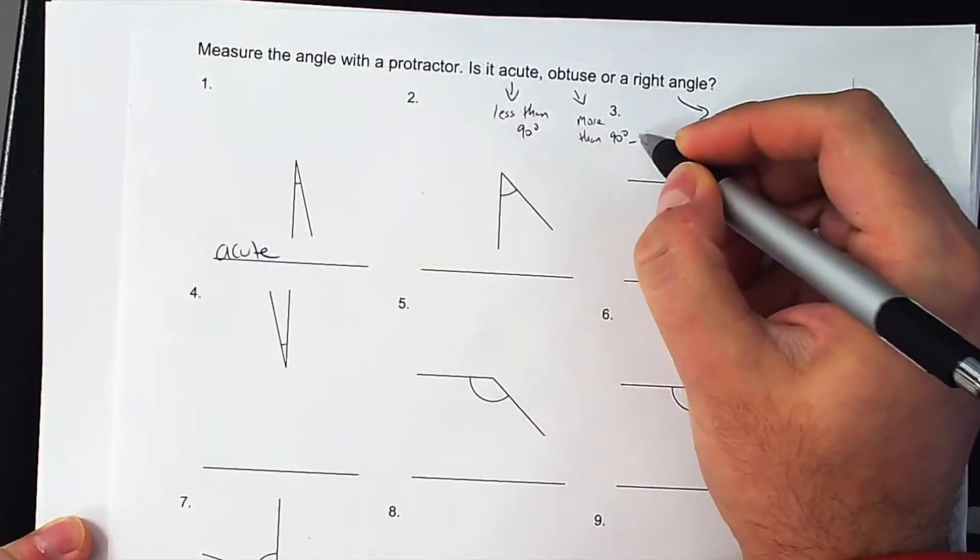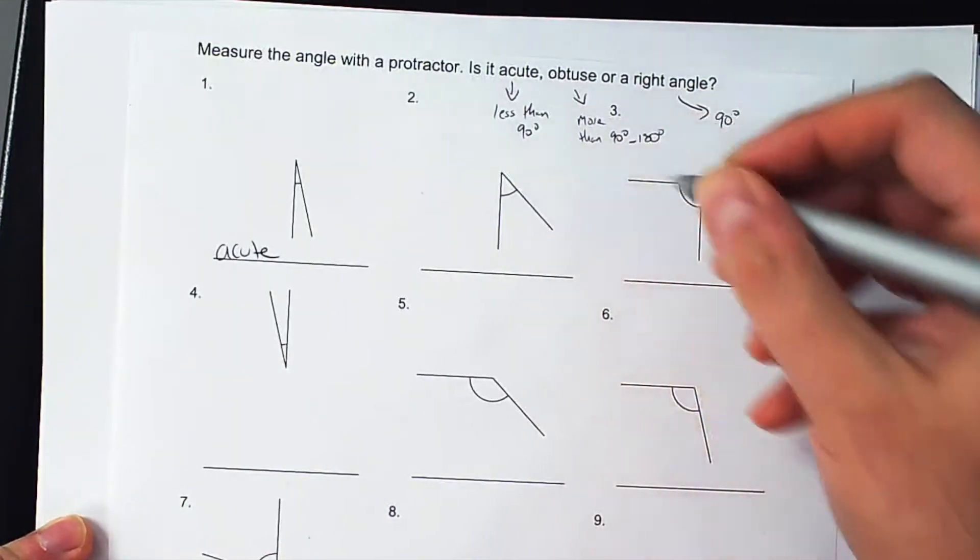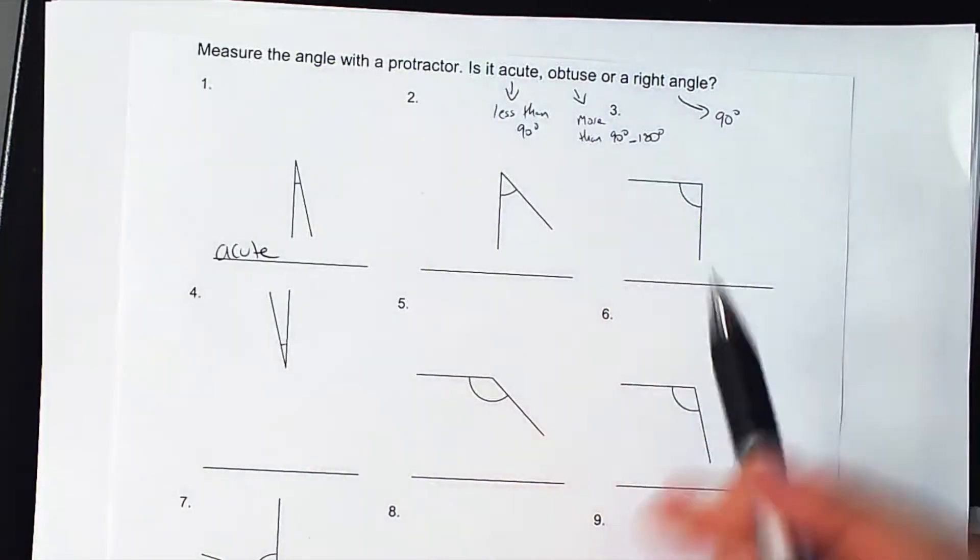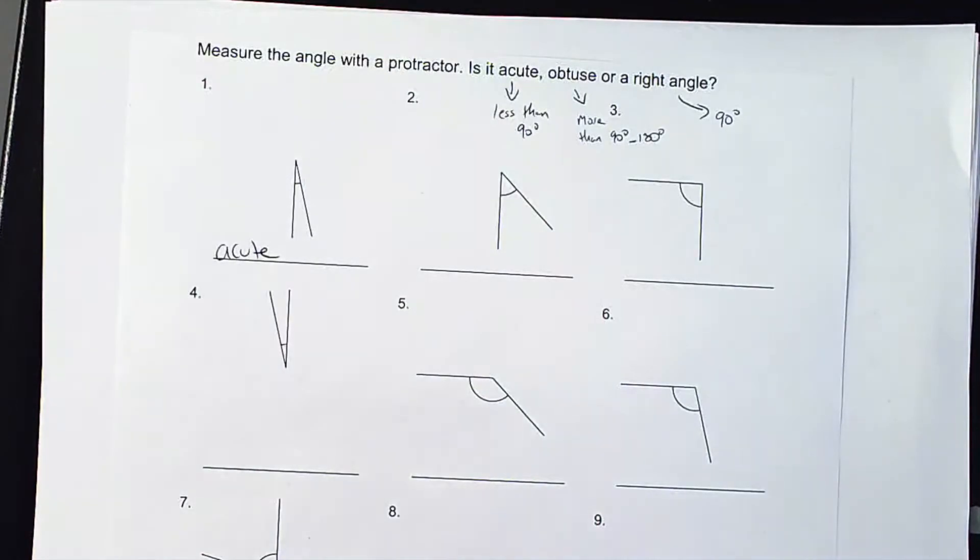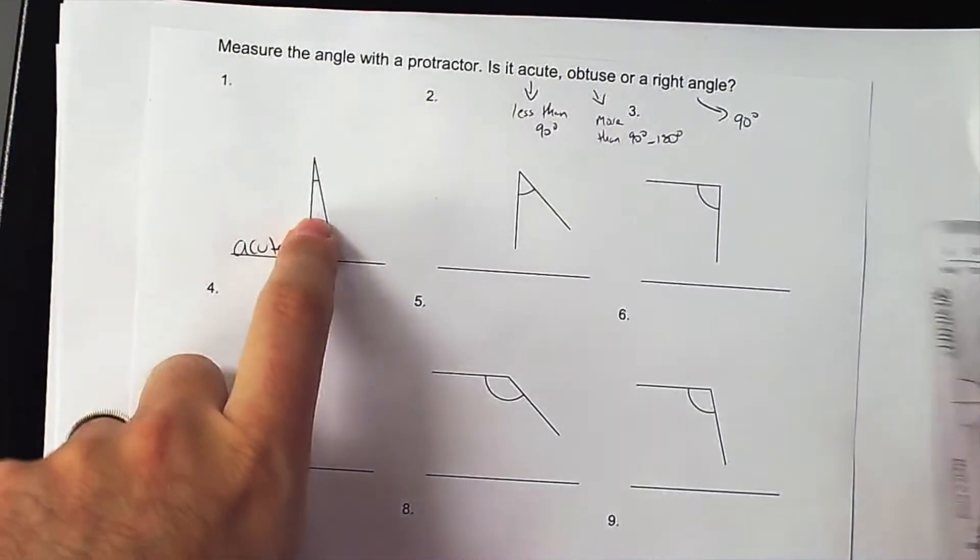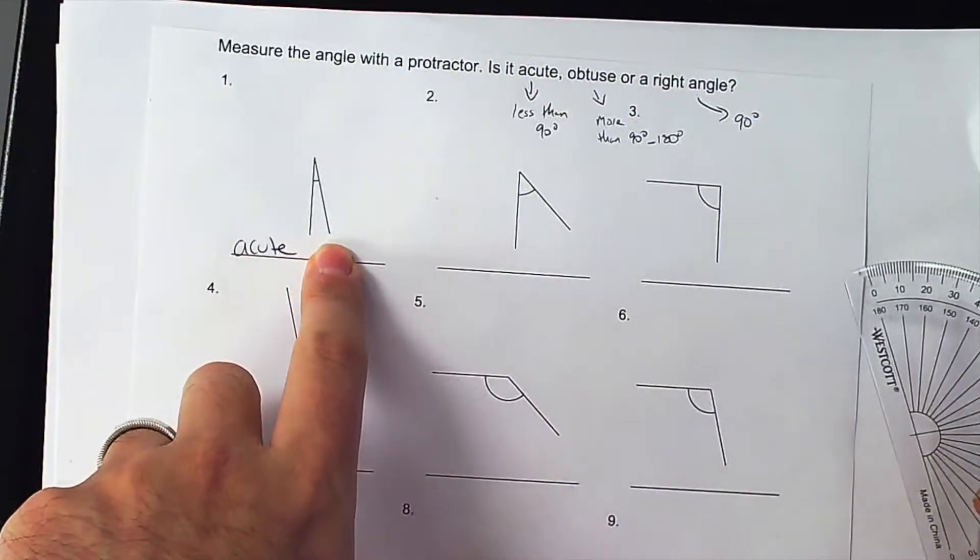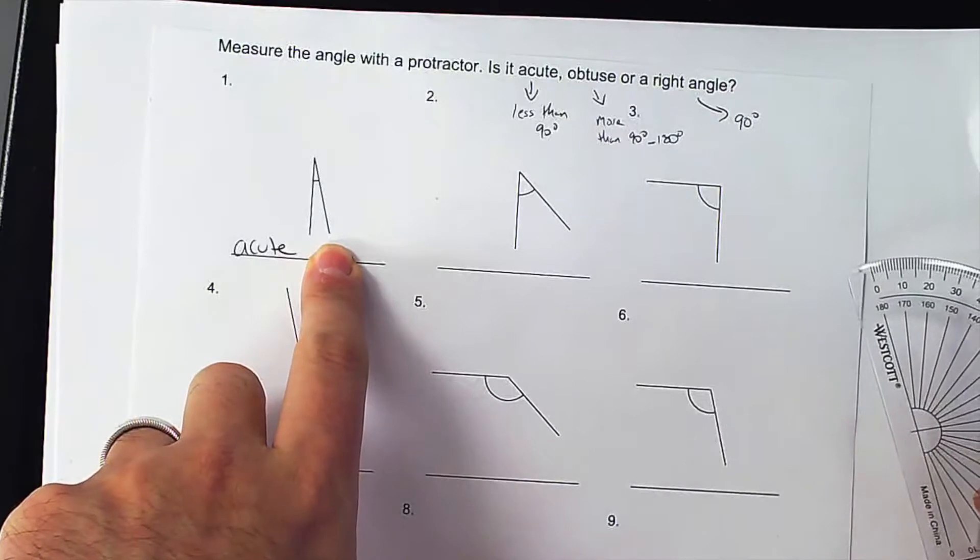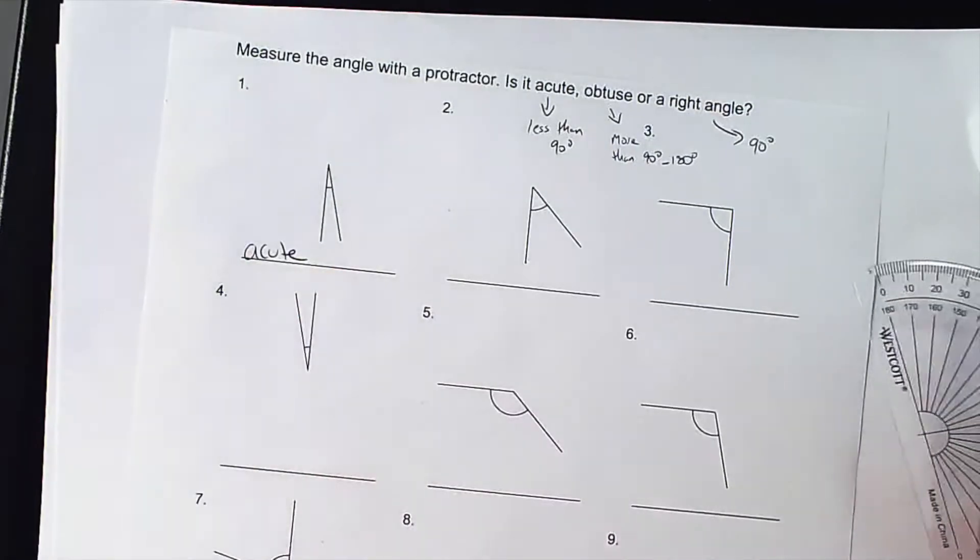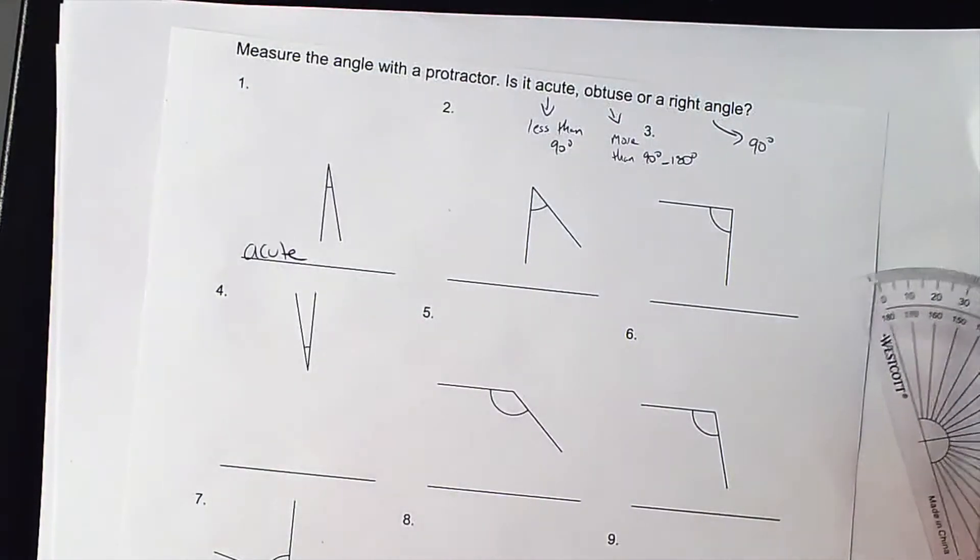This one here is between 90 and 180. So now to measure this, can I measure this angle the way it is right now, the way it's facing me? So what can I do to make this angle measurable?